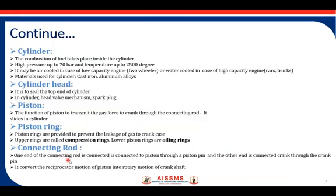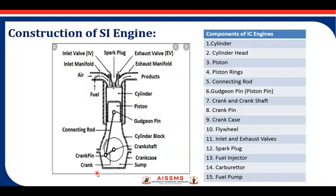Connecting Rod: One end of the connecting rod is connected to the piston through the piston pin, and the other end is connected to the crank through the crank pin. It converts the reciprocating motion of the piston into rotary motion of the crankshaft. This connecting rod converts the reciprocating movement of the piston into rotary motion of the crankshaft.